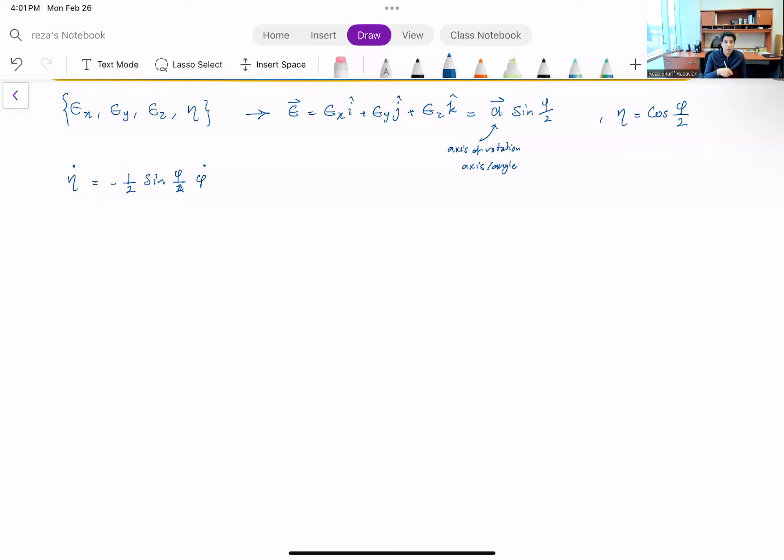And from exactly from the previous video, we figured phi dot, that phi dot was actually my omega vector dot a. So this phi dot becomes minus one half sine of phi over two times omega dot a.